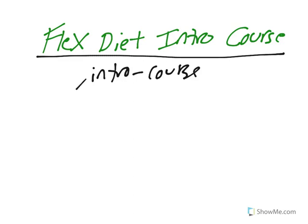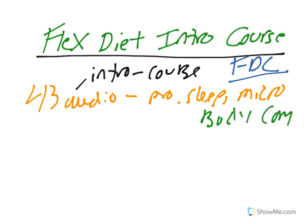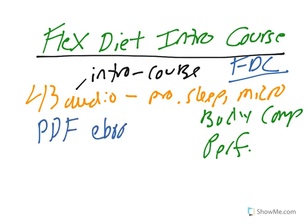What this is: I wanted to give you some more information about things that are used in the actual Flex Diet certification, which is a different course. I took 43 different audio recordings — some of these could be found on old podcast episodes — covering everything from protein to sleep to micronutrition, all the things that are going to help you with body composition and performance. These are all research-based, and we go into the research for you. We also give you a PDF e-booklet talking all about metabolic flexibility.